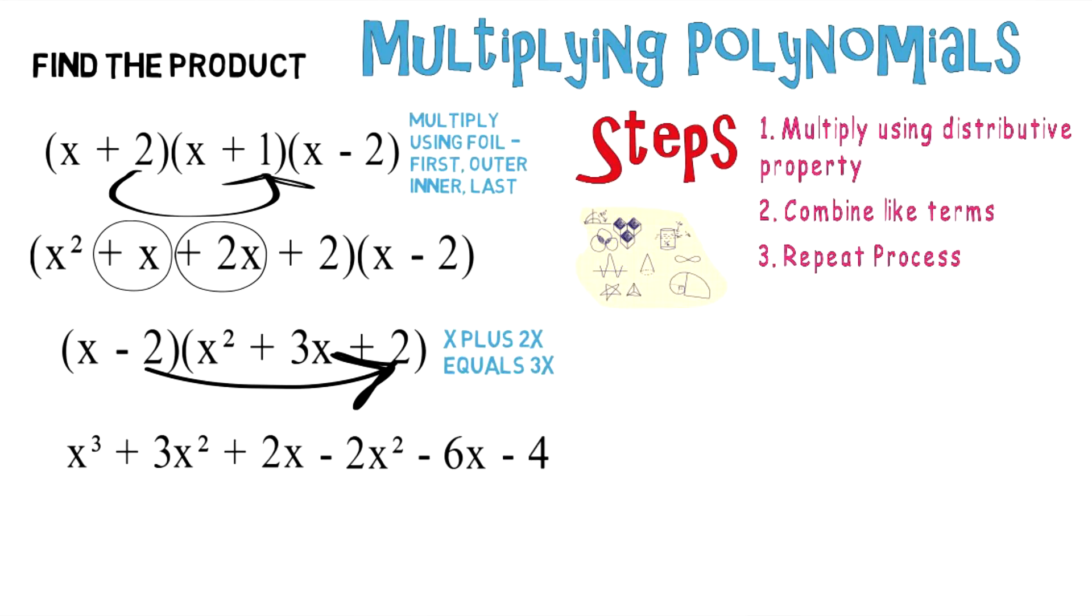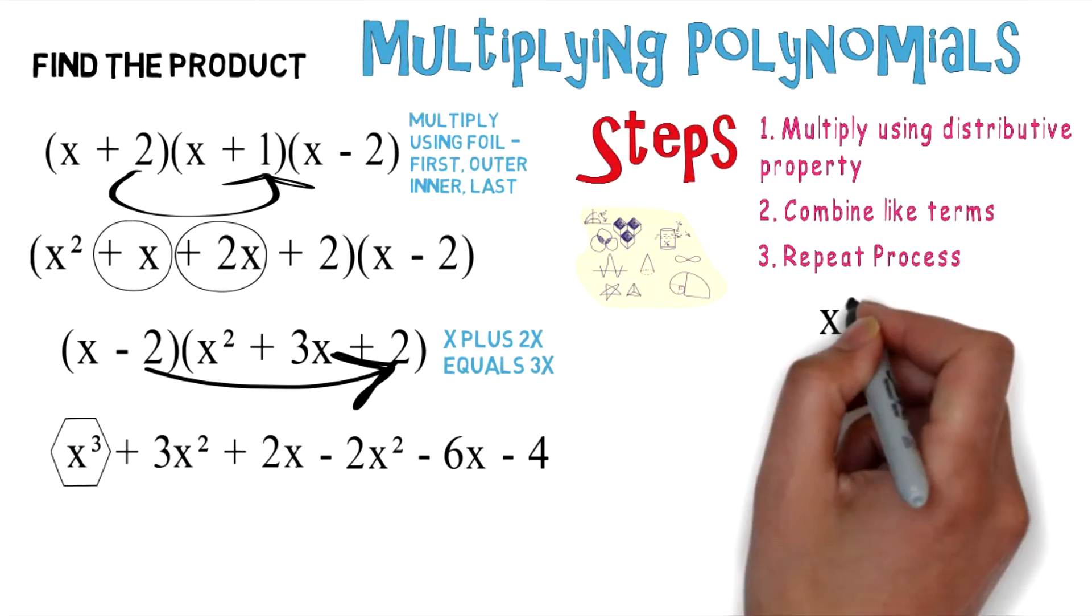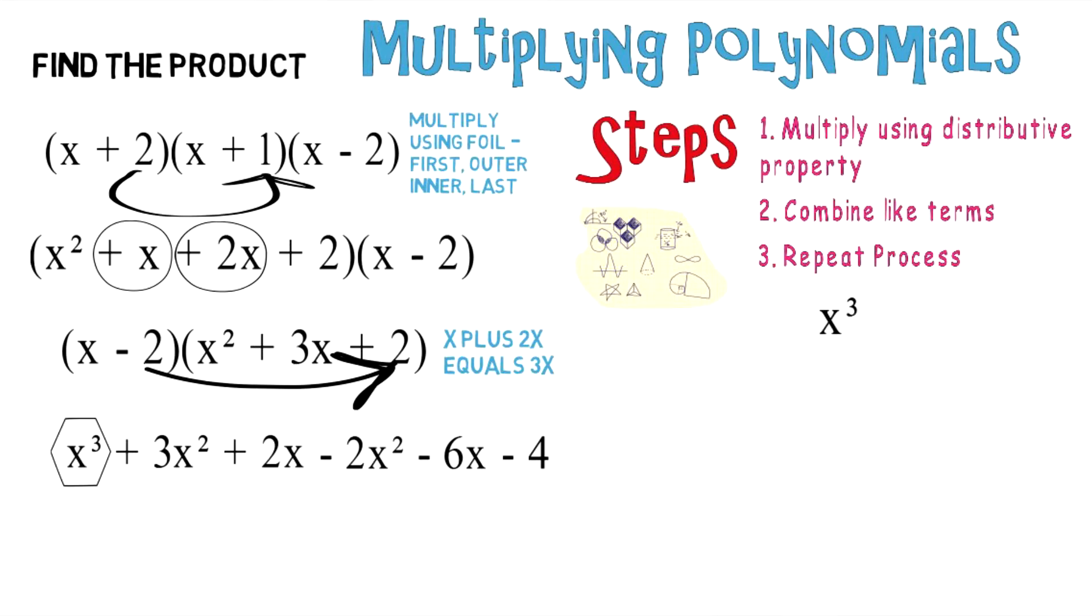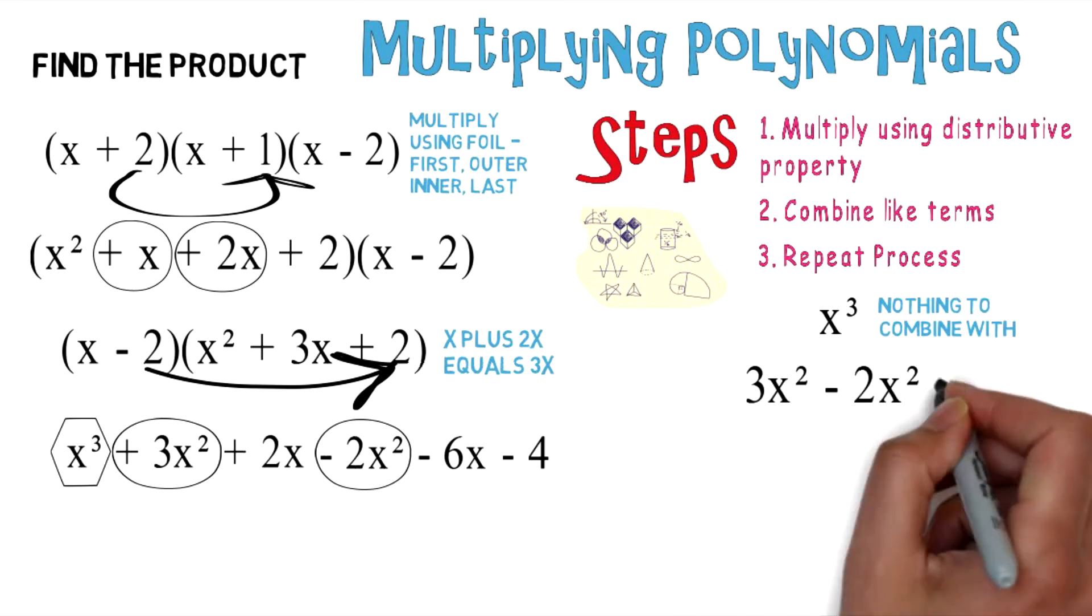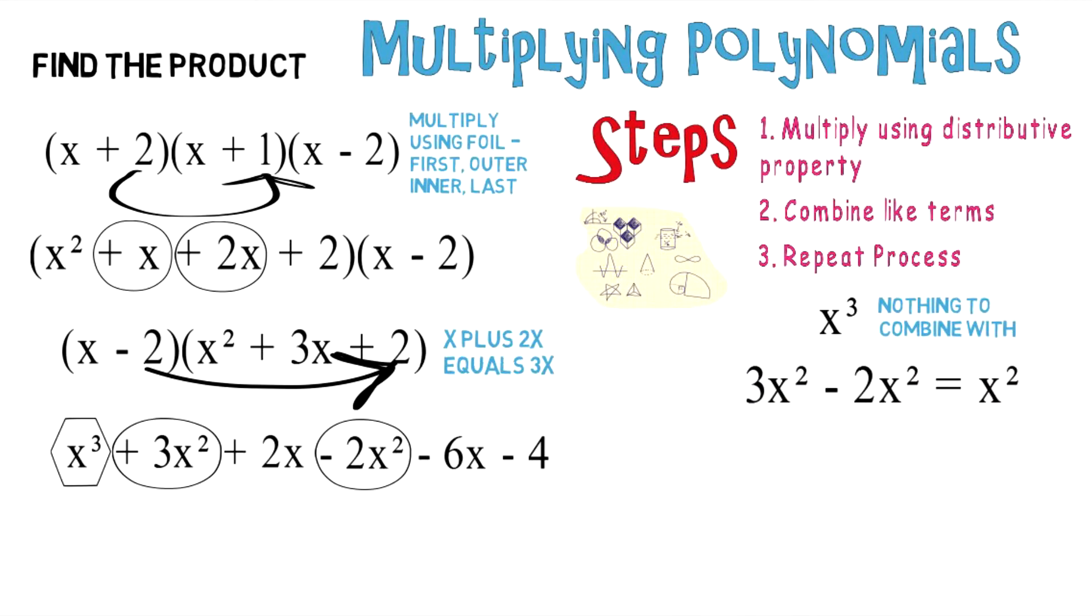Now we need to identify like terms again. You have x³, and there's nothing you can combine this with - it's all by itself. Next, 3x² and -2x² are like terms. 3x² minus 2x² gives you x².